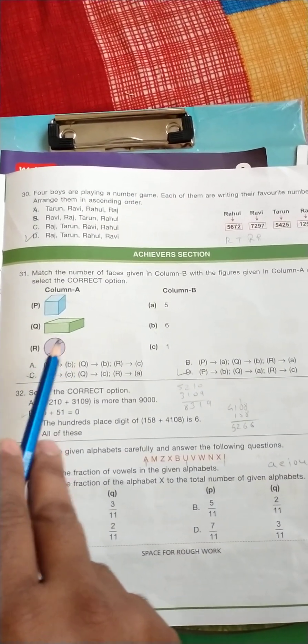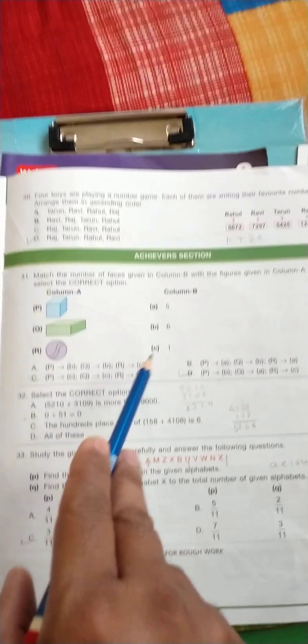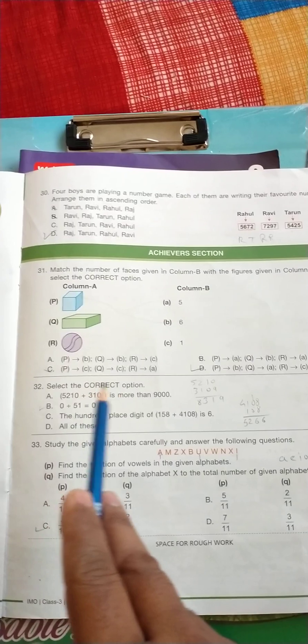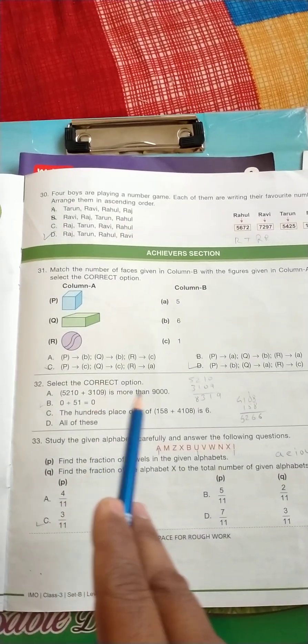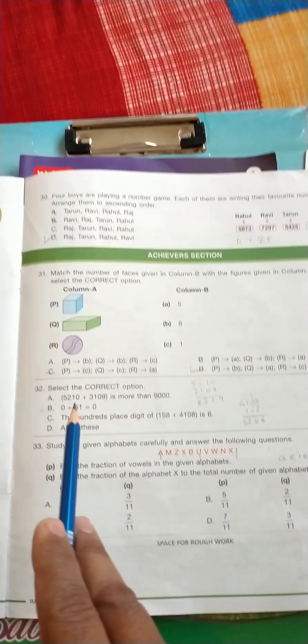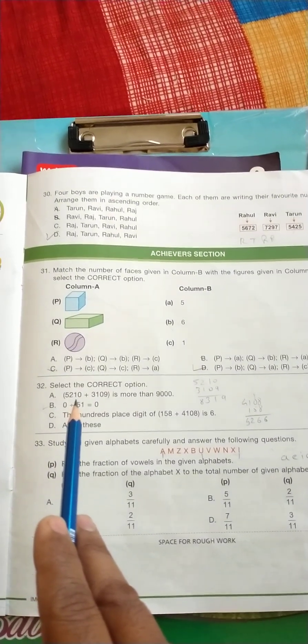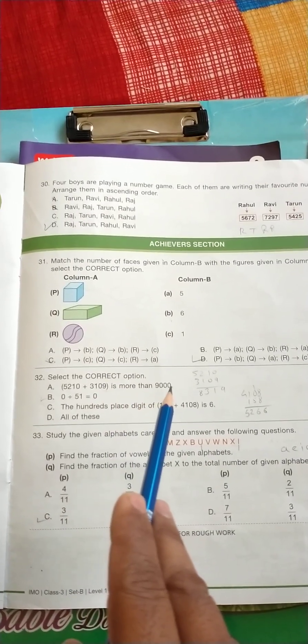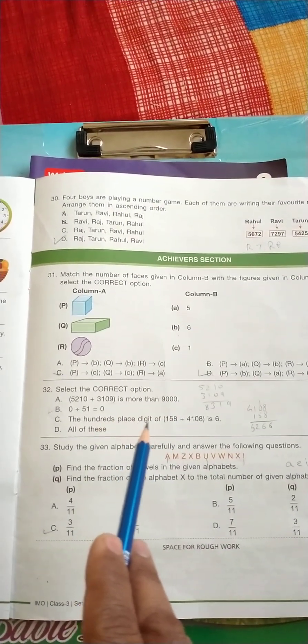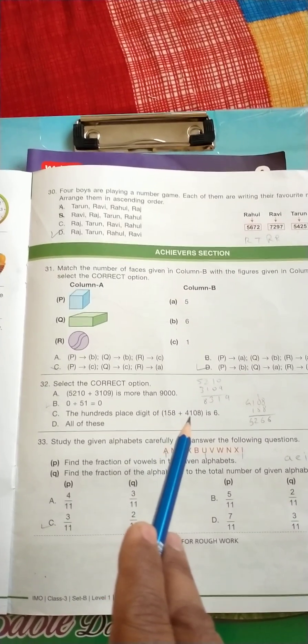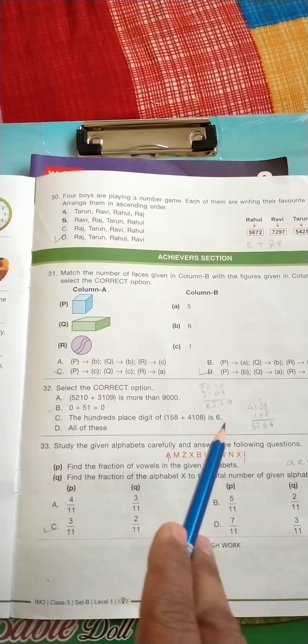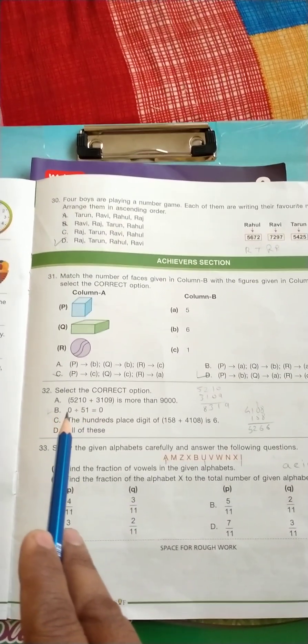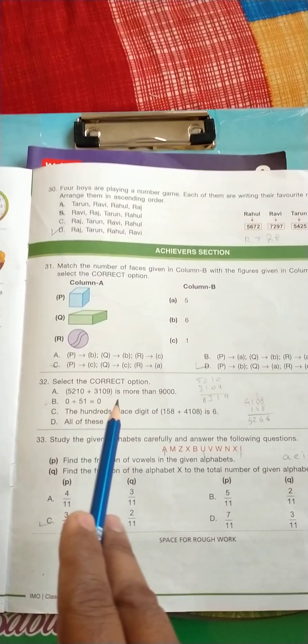Select the correct option: 5,210 plus 3,109 is more than 9,000 - so it is incorrect. The 100 plus digit of 158 plus 4,186 - that is also incorrect. So the correct option is B, 0 divided by 51 is equal to 0.